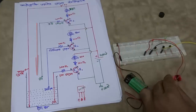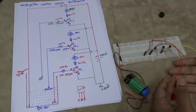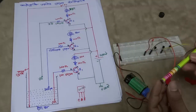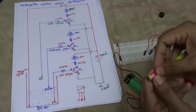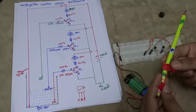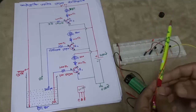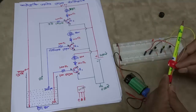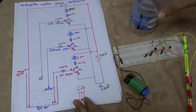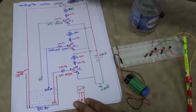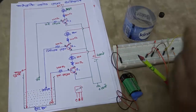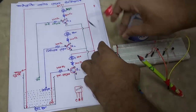Now we will pour the water. Low level, medium level, and high level probes are placed in the tank. We test with a 9V battery connected to the circuit.